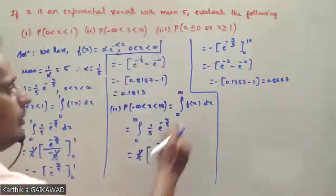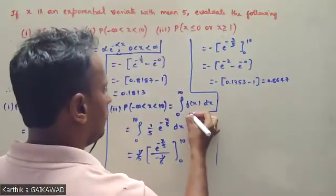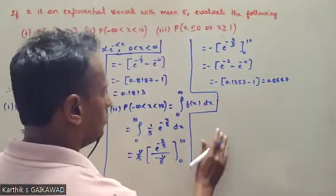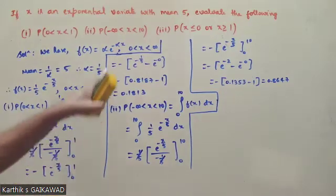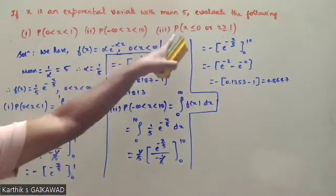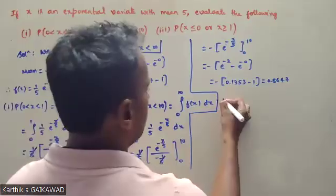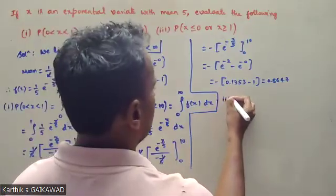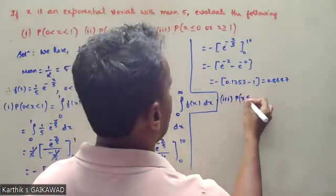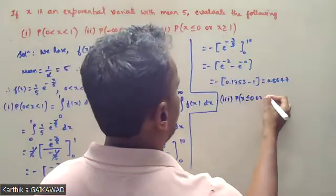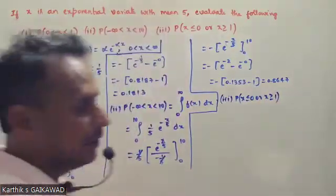The answer is 0.8647. Next, the third question: P(x less than or equal to 0 or x greater than or equal to 1).